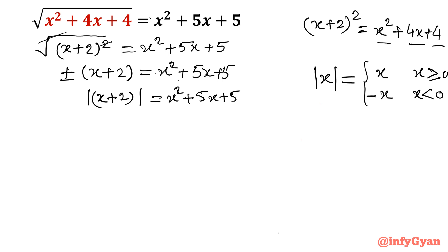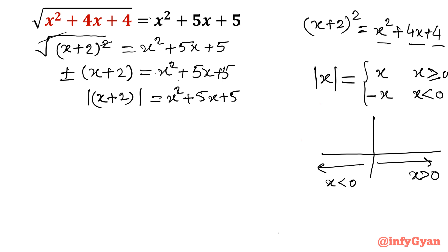Now let me explain this on the xy-axis. This side is x positive, this side is x negative, and this is the origin. For x positive it is reflecting the line y = x, and for x negative it is again the line y = -x.